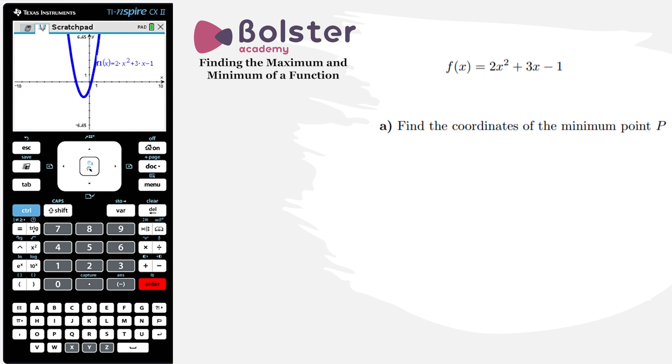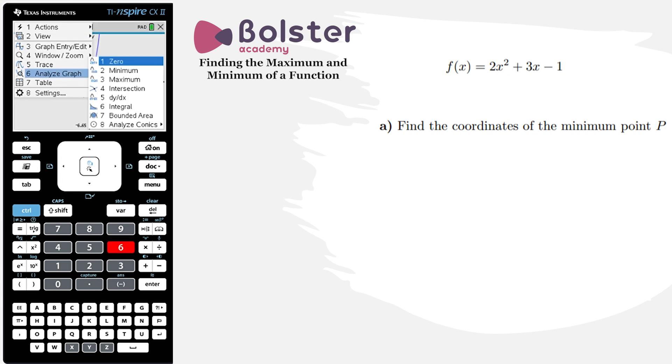Now let's say I wanted to find the minimum point on that graph. Well here's what I do, I go into menu, I go into number six which is analyze graph, and then I choose my option which is minimum number two.